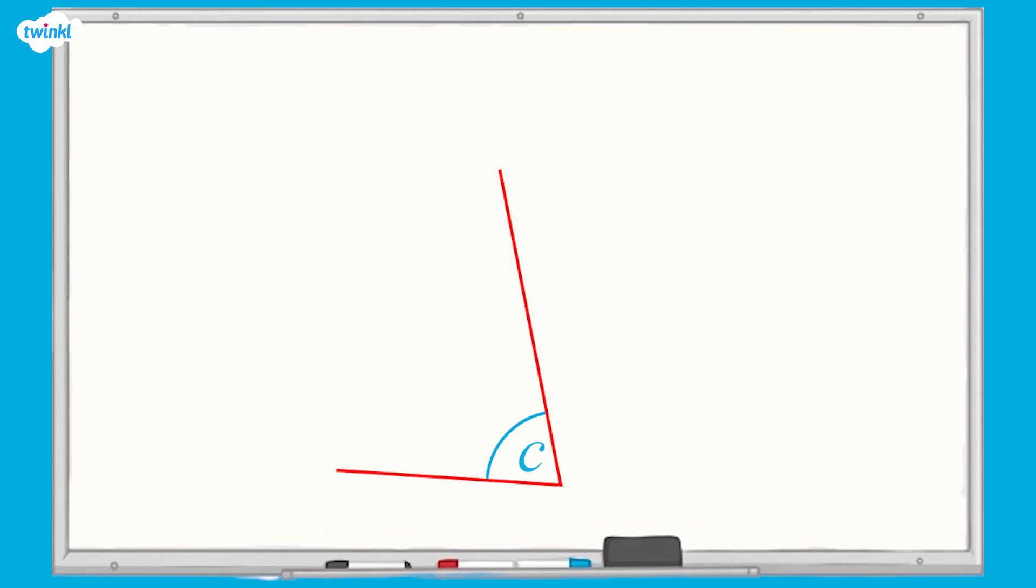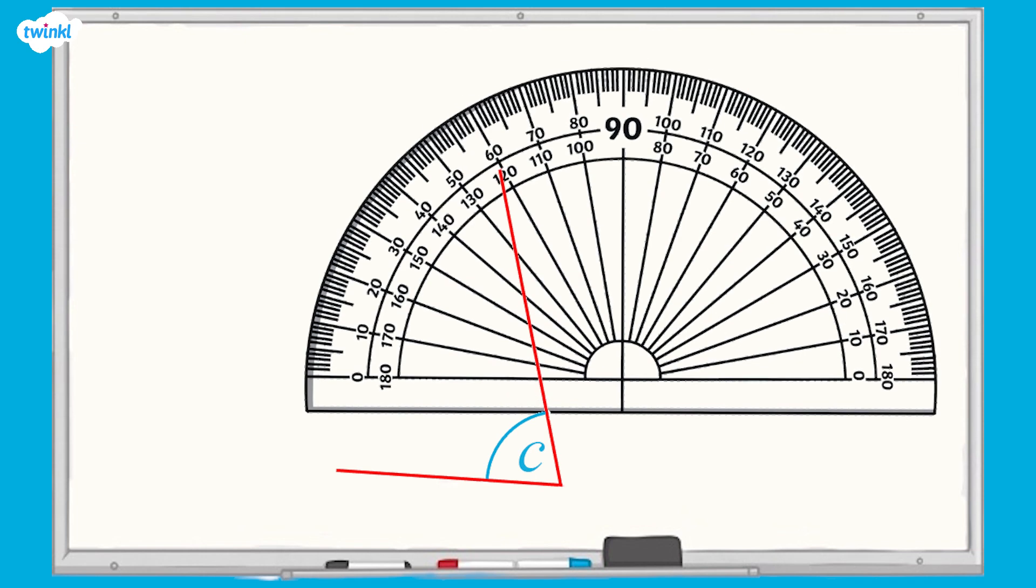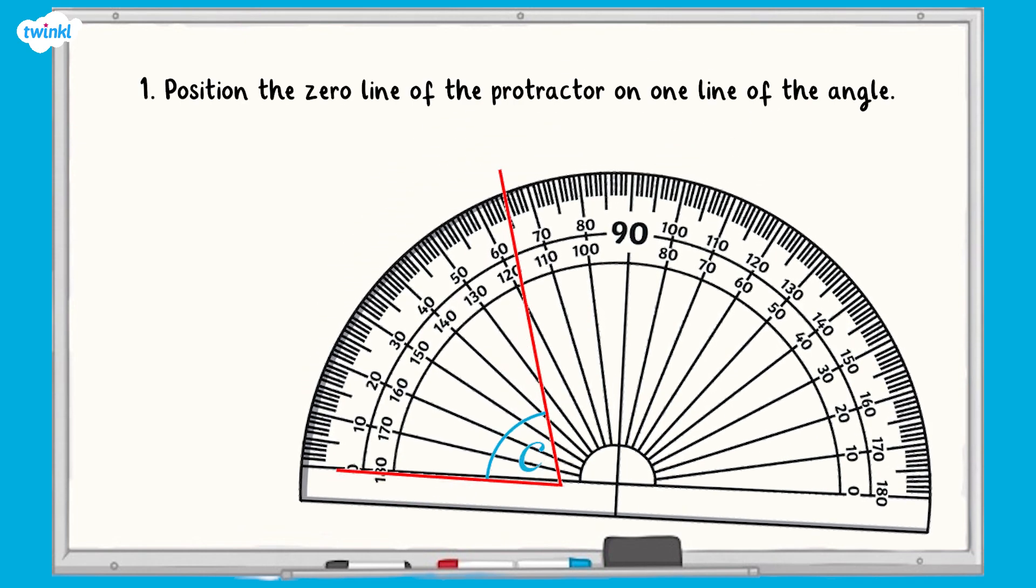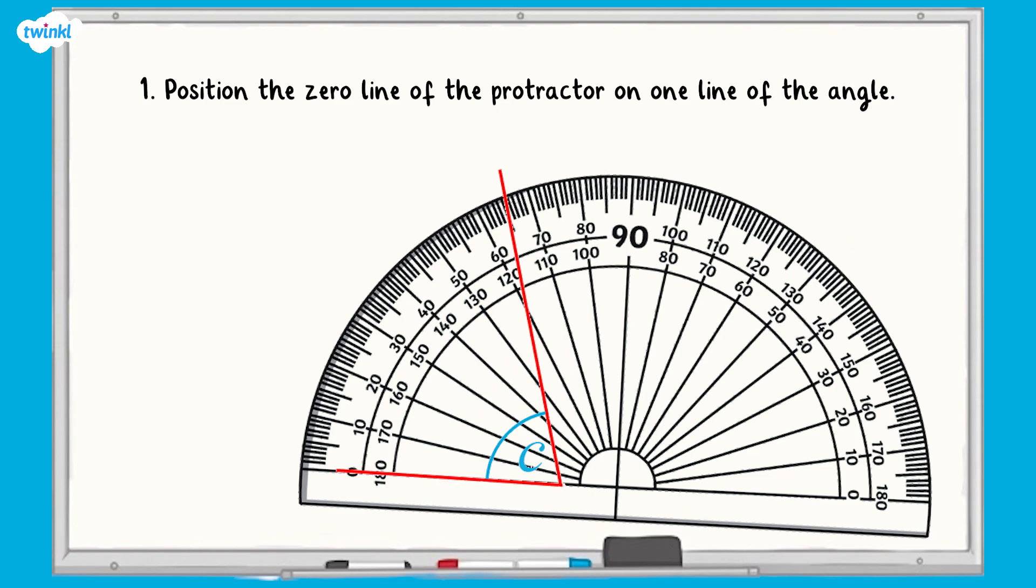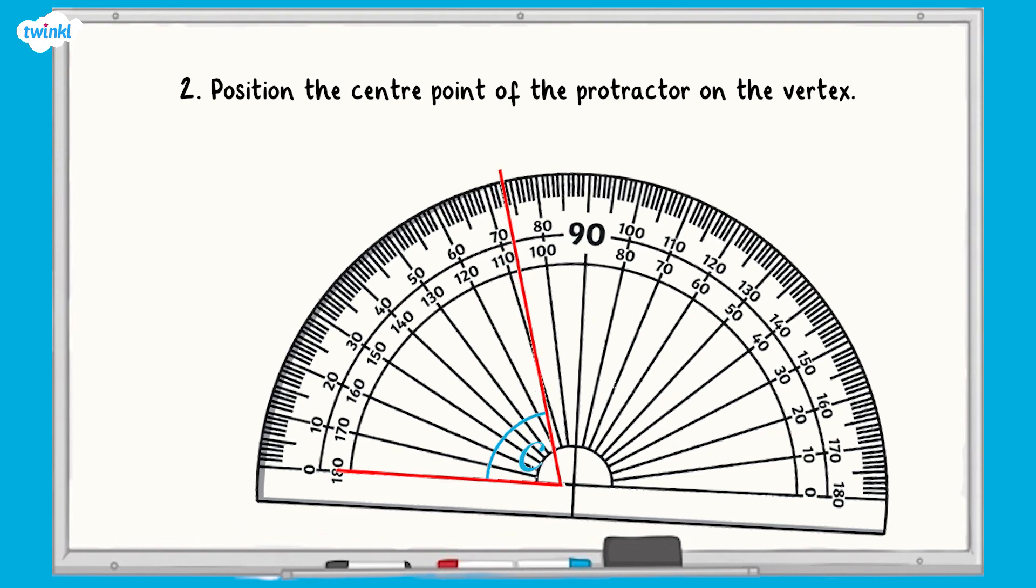Remember to estimate first. Angle C is an acute angle so the answer should be less than 90 degrees. Position the zero line of the protractor on one line of the angle. Then, position the center point of the protractor on the vertex.